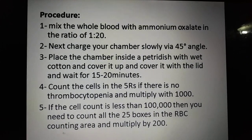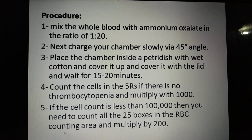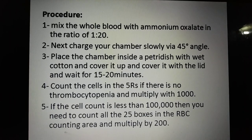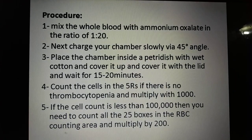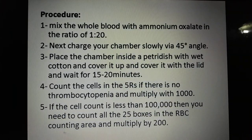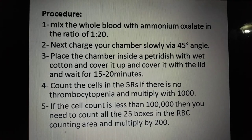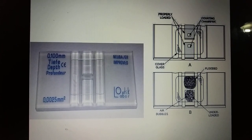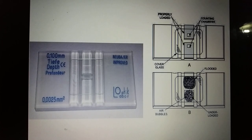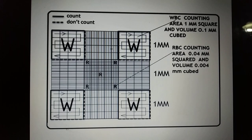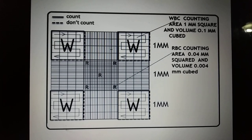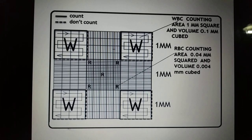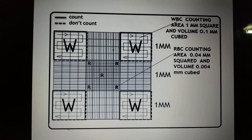Mix whole blood with ammonium oxalate in a ratio of 1:20 and charge the Neubauer chamber at a 45-degree angle. Place the chamber inside a petri dish with wet cotton, cover it, and wait 15 to 20 minutes. Then count the cells in 5 squares of the RBC counting area. If there is no thrombocytopenia, multiply by 1000. If there is thrombocytopenia (platelet count less than 1 lakh), count all 25 boxes in the RBC counting area and multiply by 200. The RBC counting area is at the center, and we count platelets in the four corner squares plus the one central square.